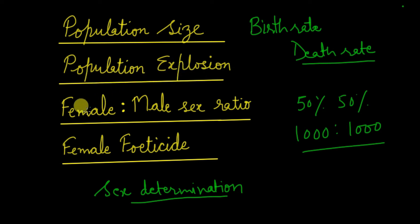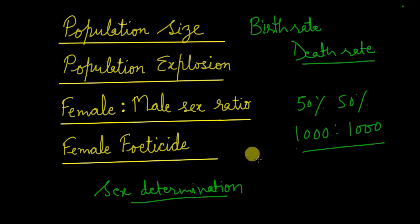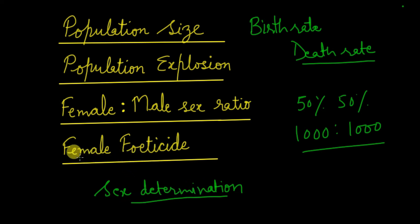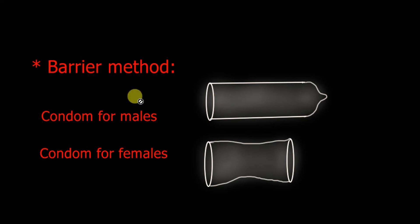Another important term is the female-male sex ratio — how many females exist per thousand males. Naturally it should be 50:50, meaning a thousand females per thousand males. However, a malpractice called female foeticide disturbs this ratio. Sex determination is done before birth, and if the fetus is found to be female, it is aborted. This malpractice must be stopped.